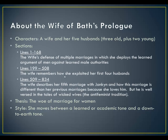In lines 509 to 834, she describes her fifth marriage with Janken. This marriage is different because she actually loves him. But he is well versed in the tales of wicked wives. This is a very common tradition during this time period called the anti-feminist tradition. It was basically a way of keeping women down — the idea that any woman who goes outside of the norm is thought of as a wicked wife. The thesis for this particular prologue is the troubles of marriage for women, the downside of marriage for women during the Middle Ages.